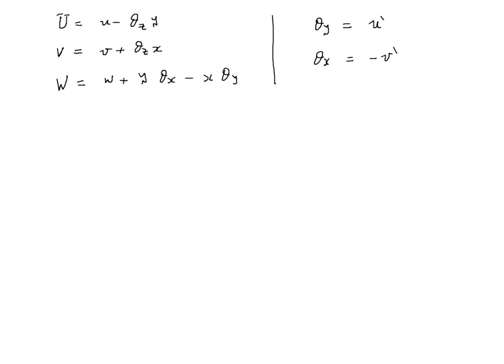So if we substitute these and then calculate our strain, what we're going to see is that epsilon_z would reduce to w prime minus y v double prime minus x u double prime.